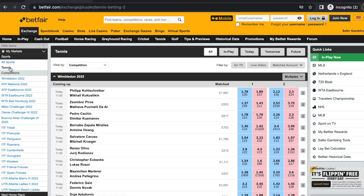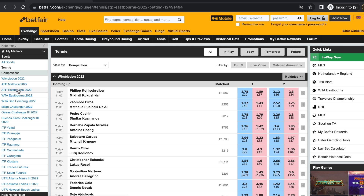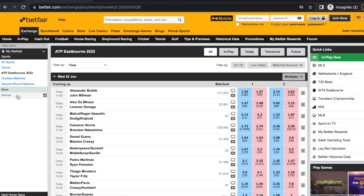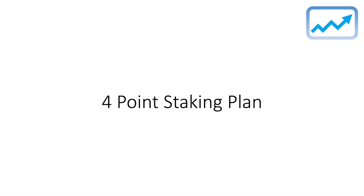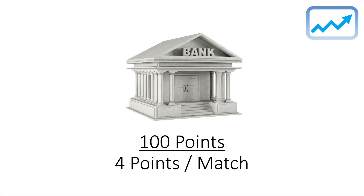You need a clearly defined strategy with a risk-managed approach, and I'm going to show you how to do this. The first thing you need to be clear on is your staking plan. I have a four-point staking plan, so I'll only ever be risking a maximum of four points on this strategy. My trading bank is made up of an overall 100 points with a four-points-per-match risk strategy.